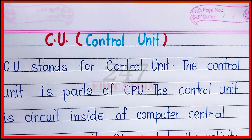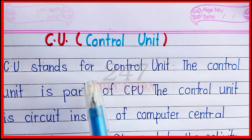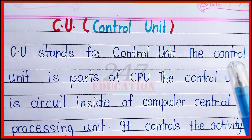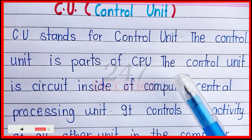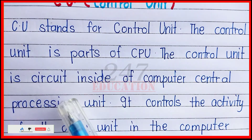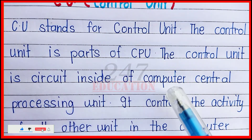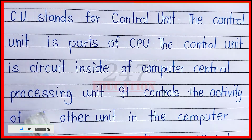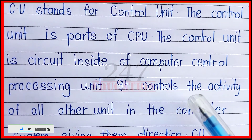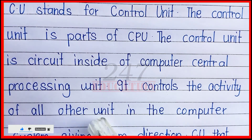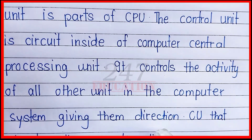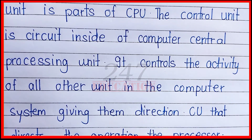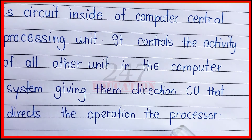To summarize: the CU stands for control unit. The control unit is a circuit inside the computer's central processing unit. It controls the activity of all units in the computer system, giving them direction. The CU directs the operation of the processor. Thank you.